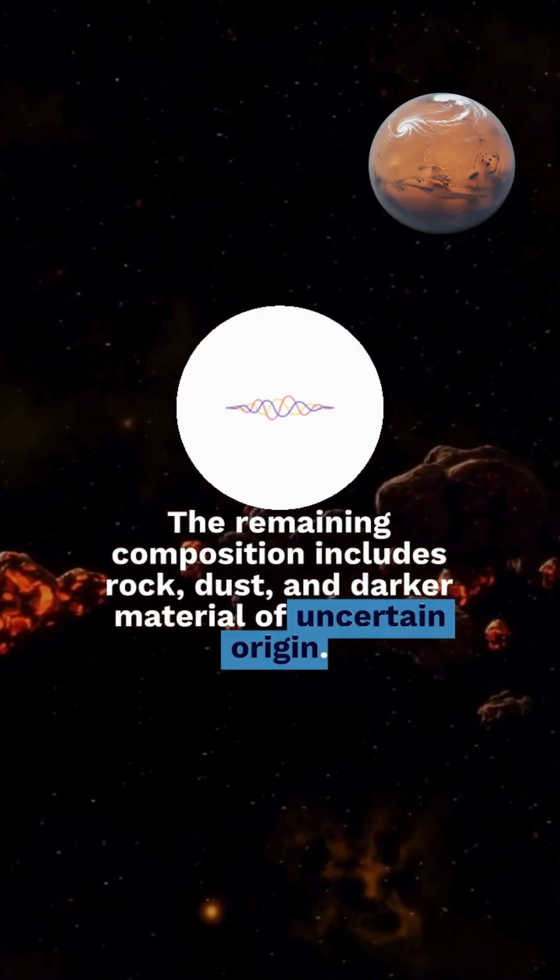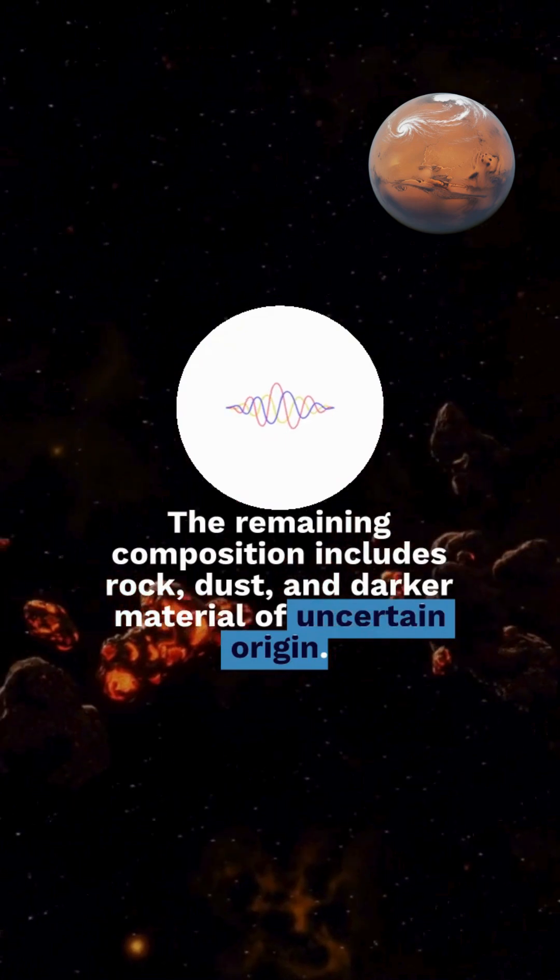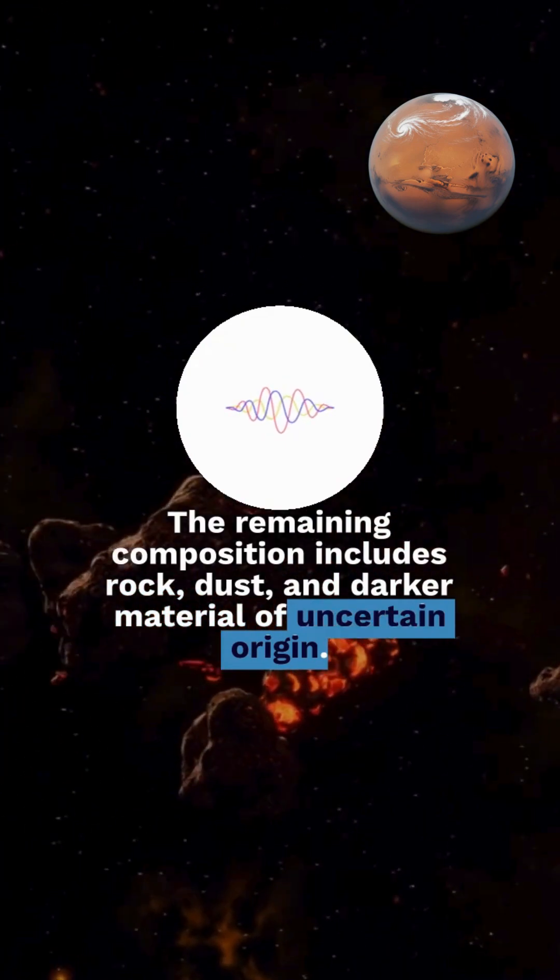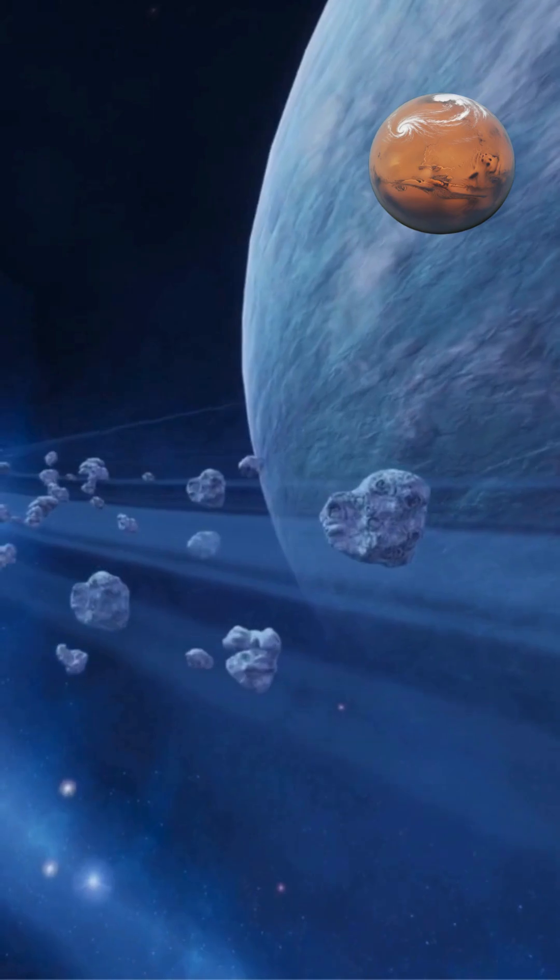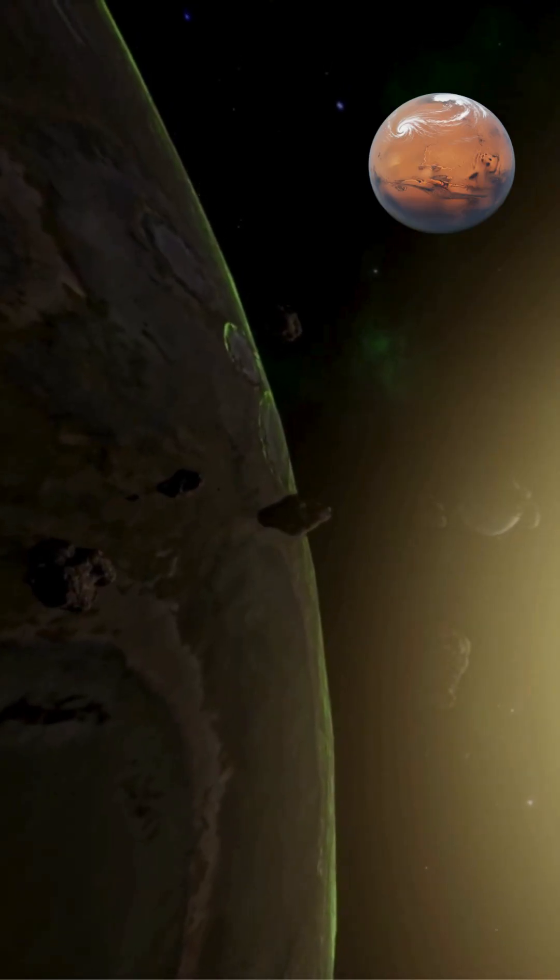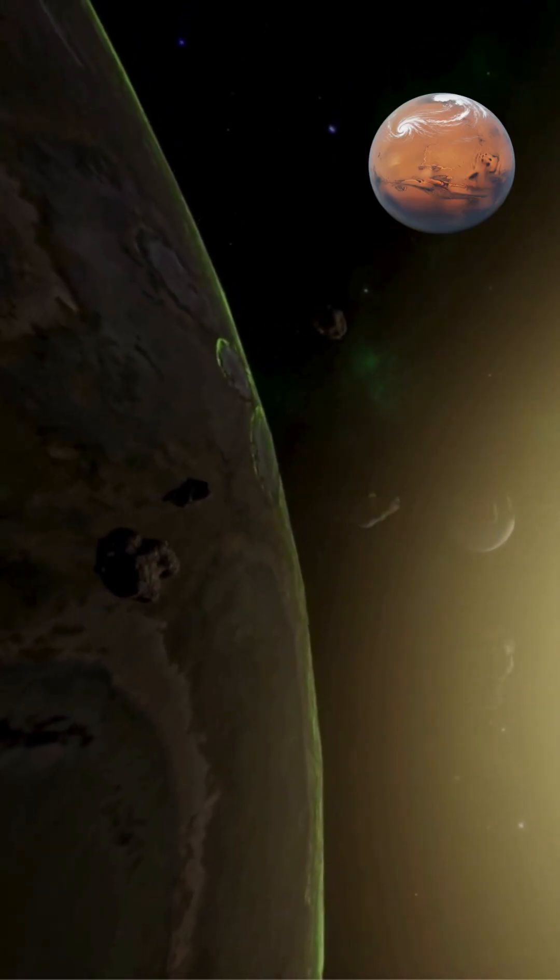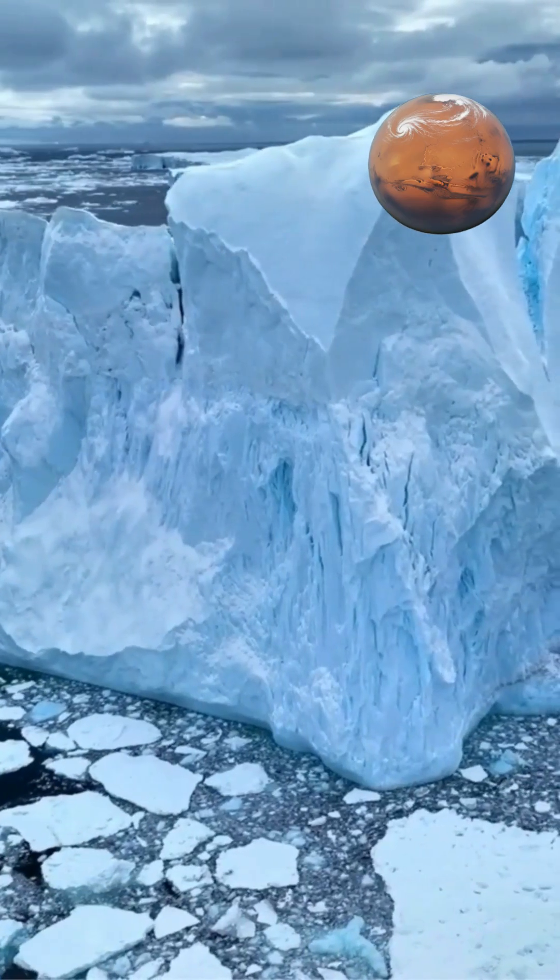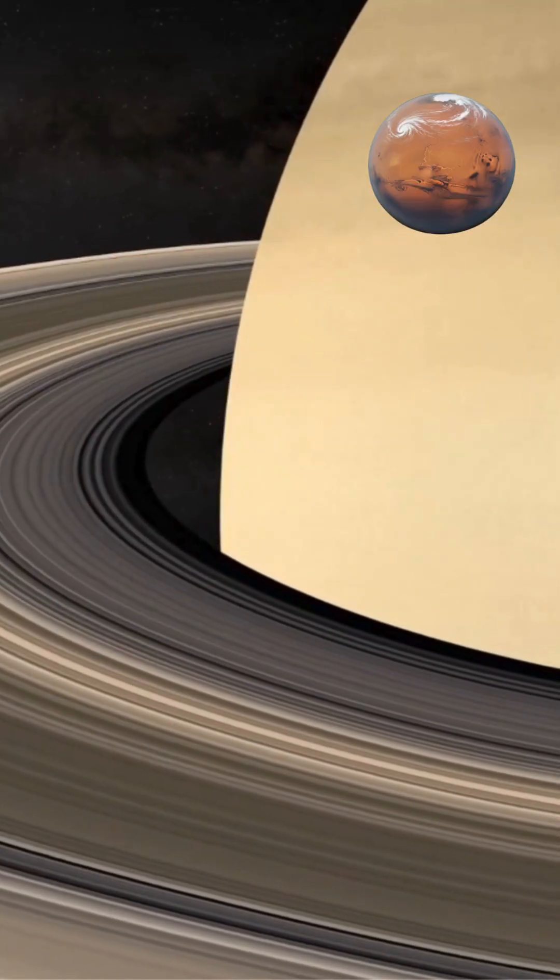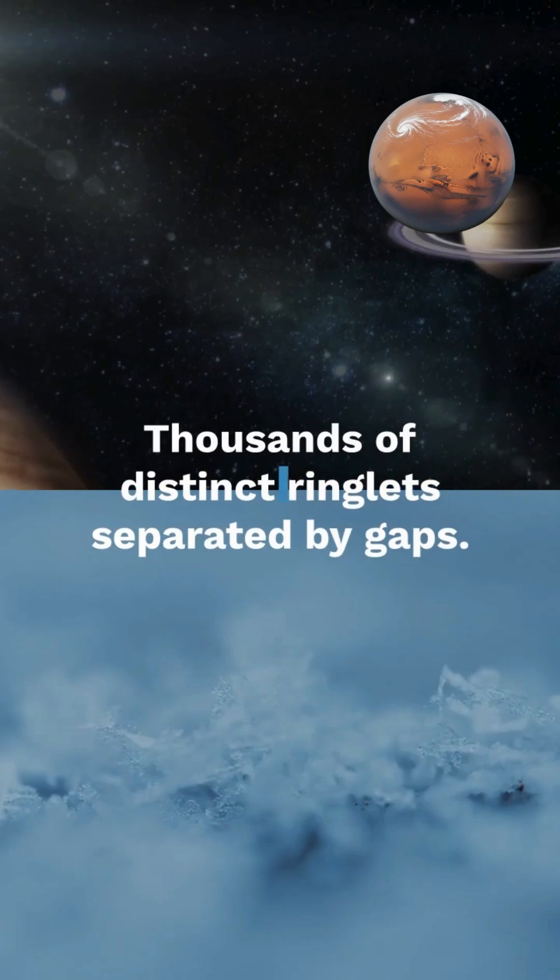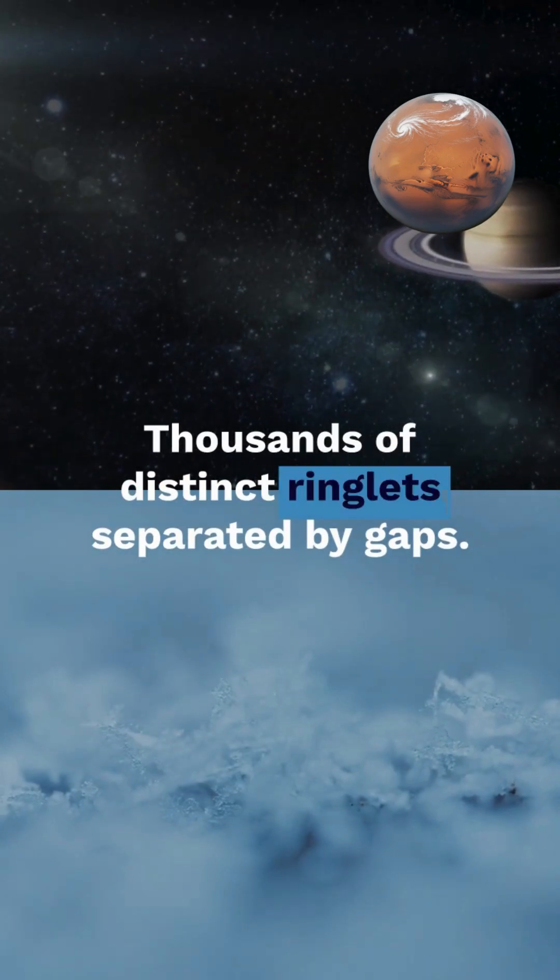The remaining composition includes rock, dust, and darker material of uncertain origin. Some regions display reddish or brownish coloration, possibly from organic compounds or metallic minerals darkened by solar radiation exposure over billions of years. The rings exhibit a complex internal structure, with thousands of distinct ringlets separated by gaps.